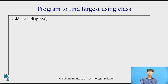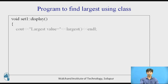Then the last thing is defining the display function. Its return type is void and it belongs to the class called set1, using the scope resolution operator. I am using the cout statement — the largest value is obtained by calling the largest function, then endl. You can use \n or endl depending on the situation: \n can be used within a string inside double quotes, while endl is used after the string. You cannot use \n after the string as it will produce an error.